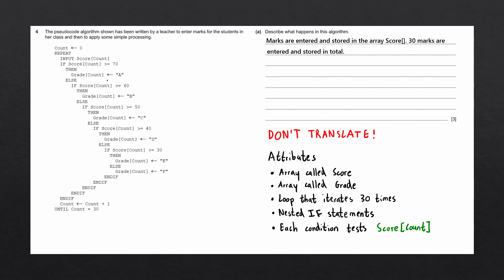The easiest way to understand a nested if statement is to run it using some test data. Let's try the values 65 and 20. If the teacher enters 65, it is compared to 70: 65 ≥ 70 is false, so we go to the else. Then 65 is compared to 60: 65 ≥ 60 is true, so we go to that if statement's body, which assigns the string value B to grade at count. So when we enter 65, we store the value B.